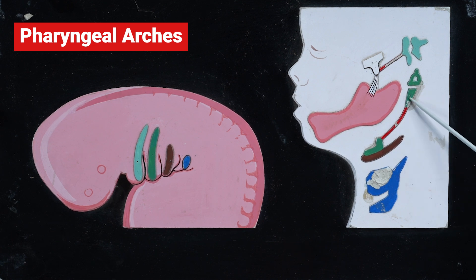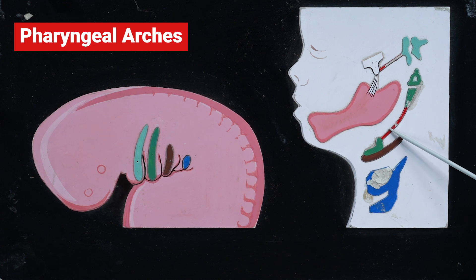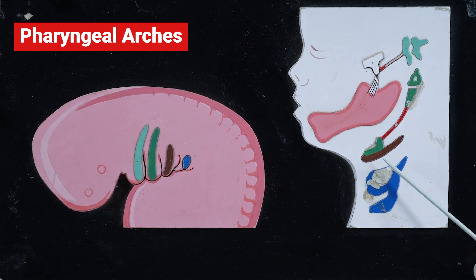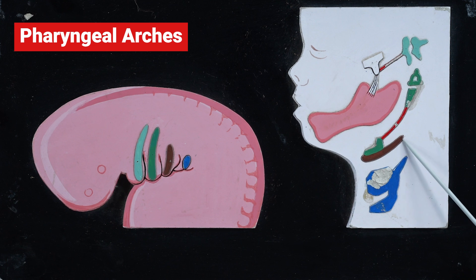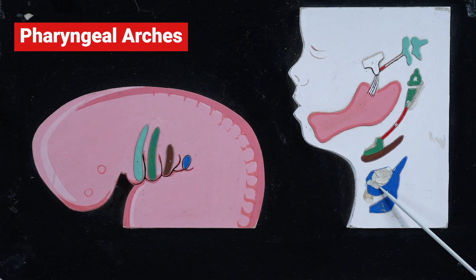These are the bony and ligamentous structures derived from the second arch cartilage, or Reichert's cartilage. The third arch cartilage gives rise to the lower part of the body of the hyoid bone and the greater cornu of the hyoid. The fourth arch cartilage gives rise to the thyroid cartilage, which is one of the major cartilages of the larynx.